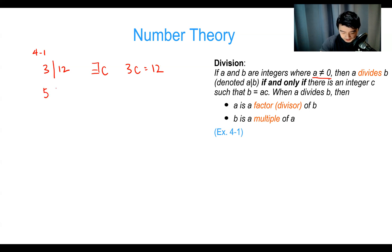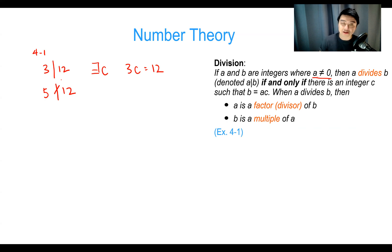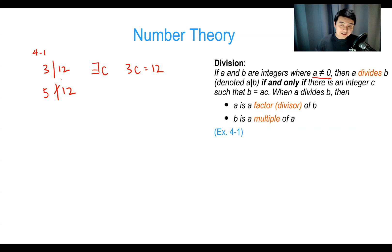What about five divides 12? Is there an integer C so that 5 times C equals 12? The answer is no — there is no such integer. So we say five does not divide 12. Just remember: whenever you see the symbol A | B, another way to read that is A times an integer equals B.